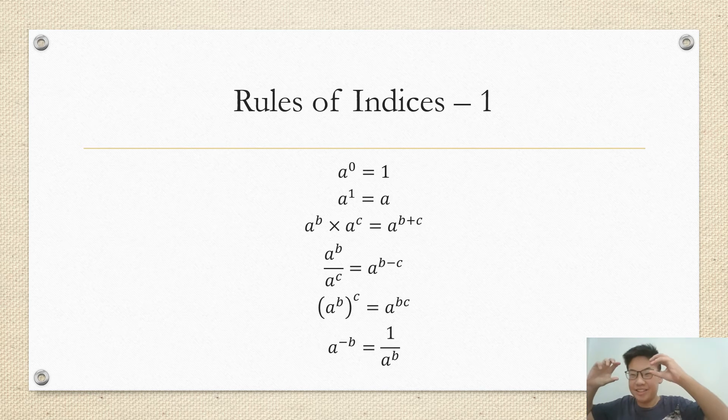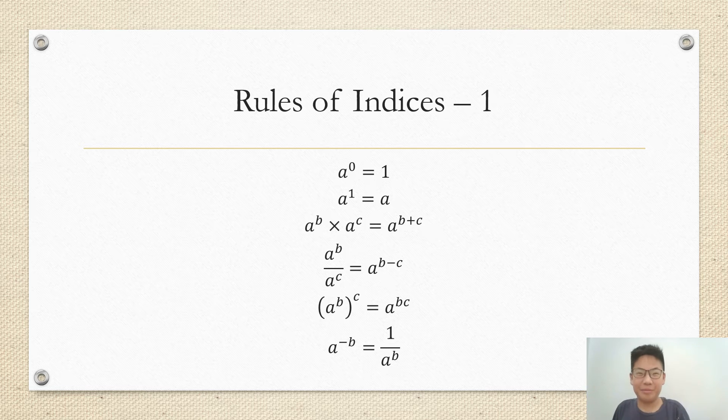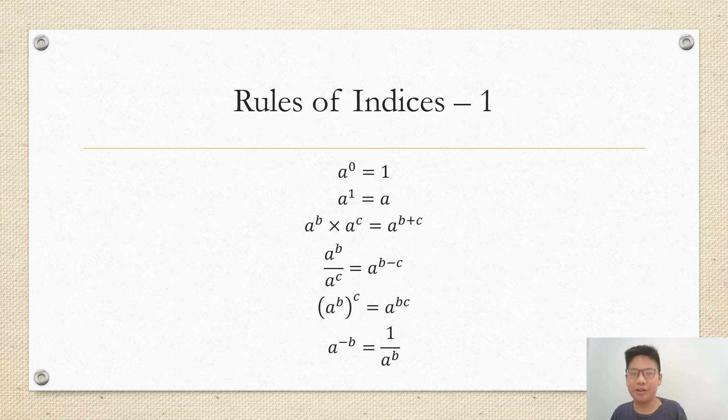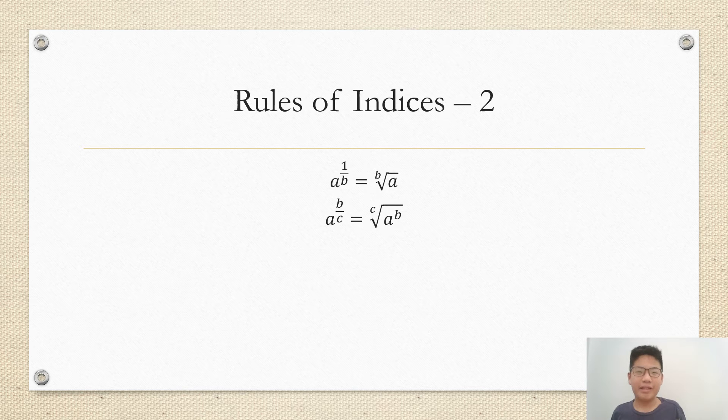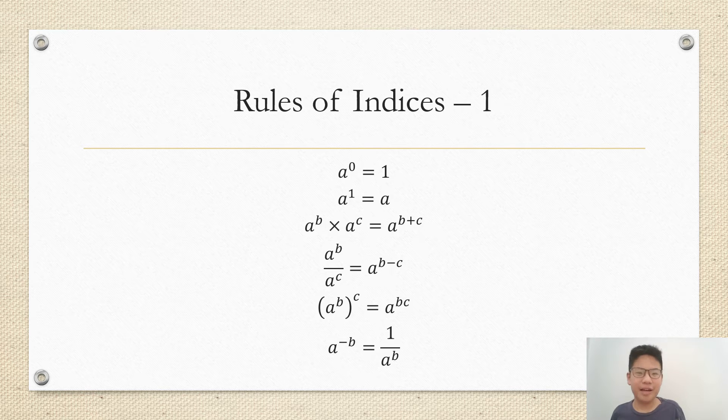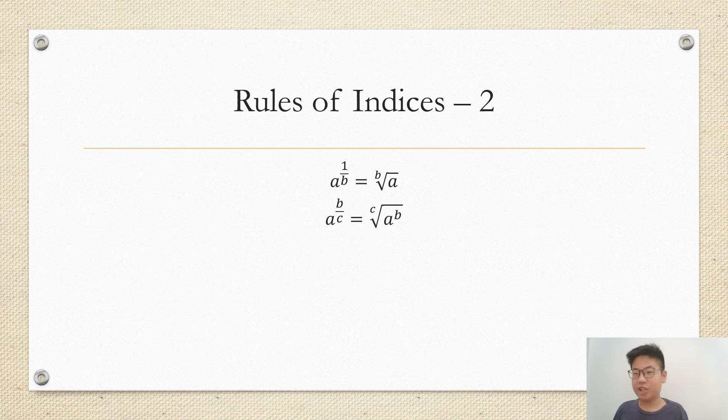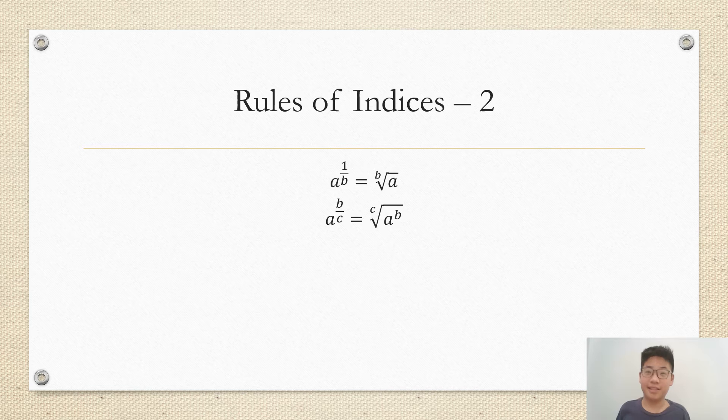Hence you just add the number of a's together to get b plus c. And then a^b over a^c works similarly, and (a^b)^c works similarly. And a^(-b), 1 over a^b, and a^(b/c) are just different notations of writing the same thing.